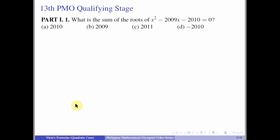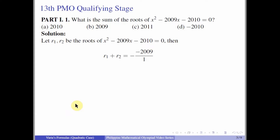Let's start with the 13th PMO qualifying stage, Part 1, Number 1: What is the sum of the roots of x² - 2009x - 2010 = 0? Let R₁ and R₂ be the roots. Then R₁ + R₂ = -(-2009)/1 = 2009. So the answer is 2009.